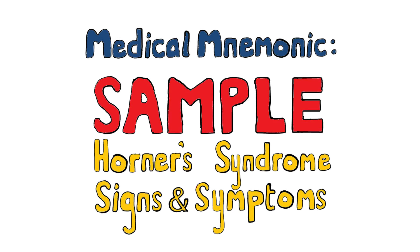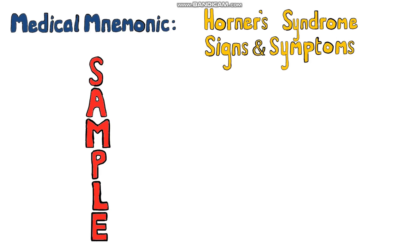SAMPLE is a medical mnemonic to help you remember the clinical presentation of Horner's syndrome, which is a collection of signs and symptoms that arise due to disruption of the sympathetic nerves that innervate the head and neck regions. Remember, the signs and symptoms occur on the same side as the injury — they are ipsilateral.